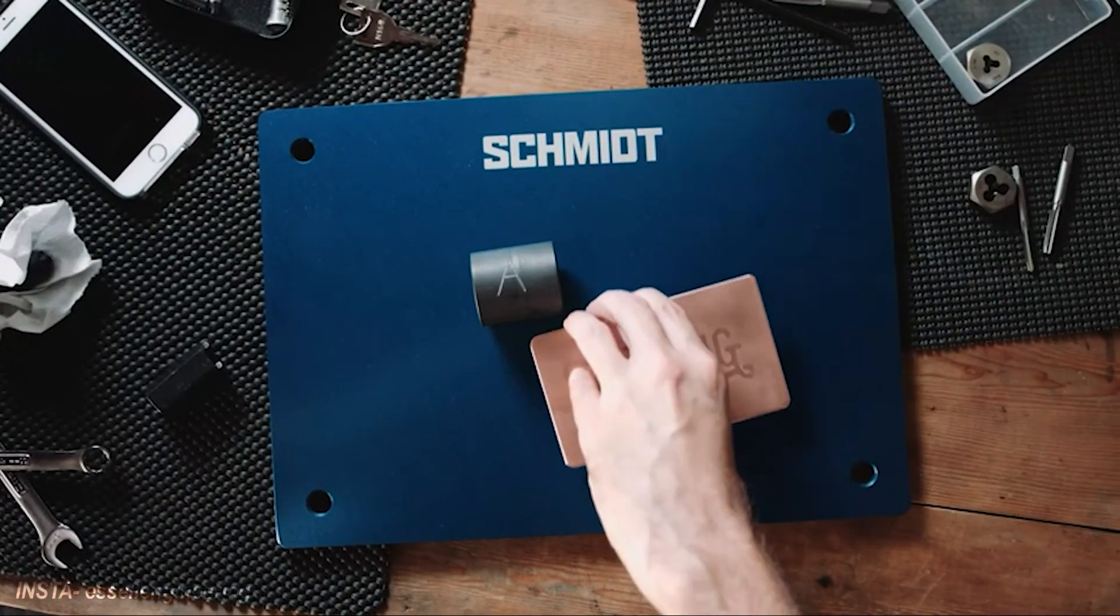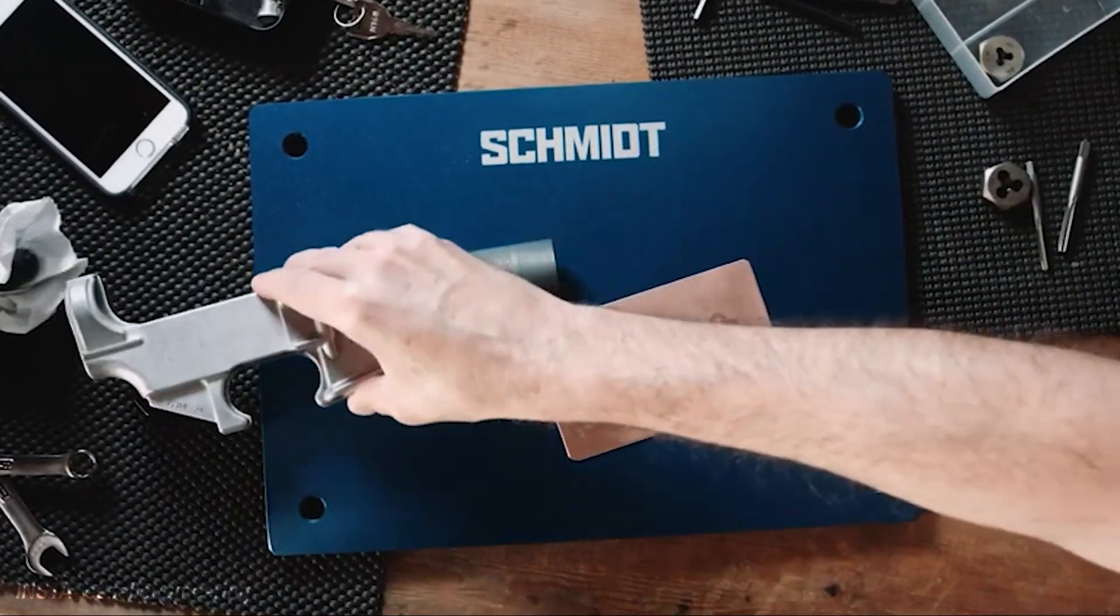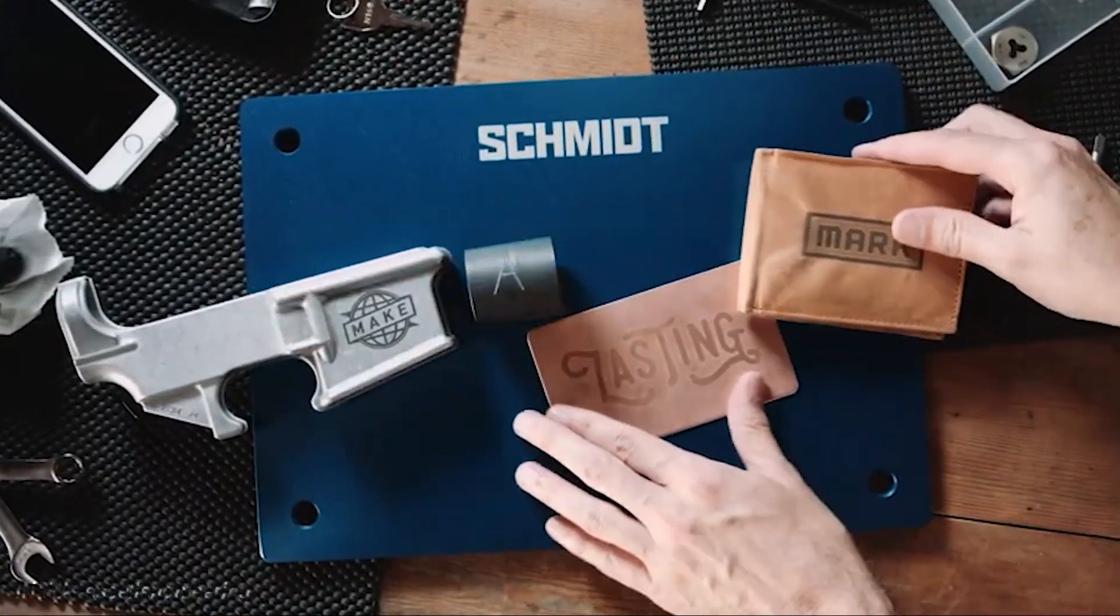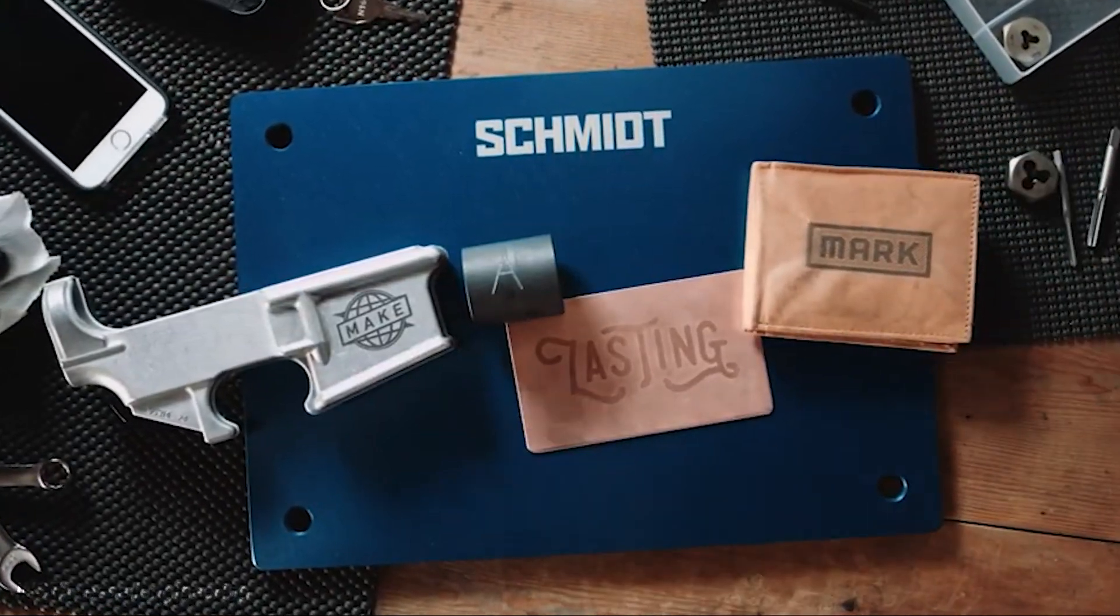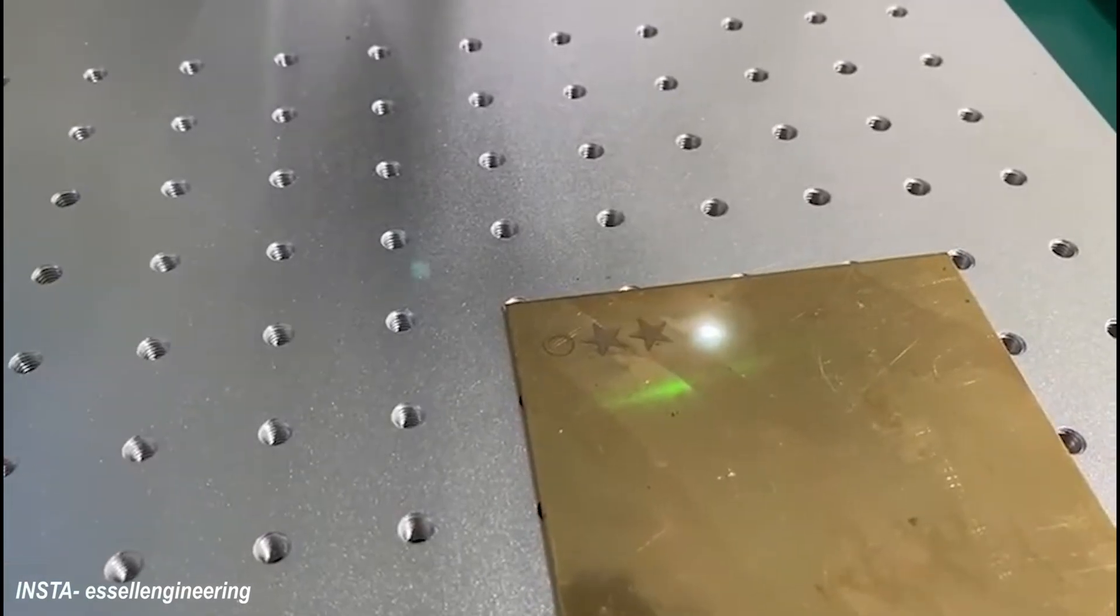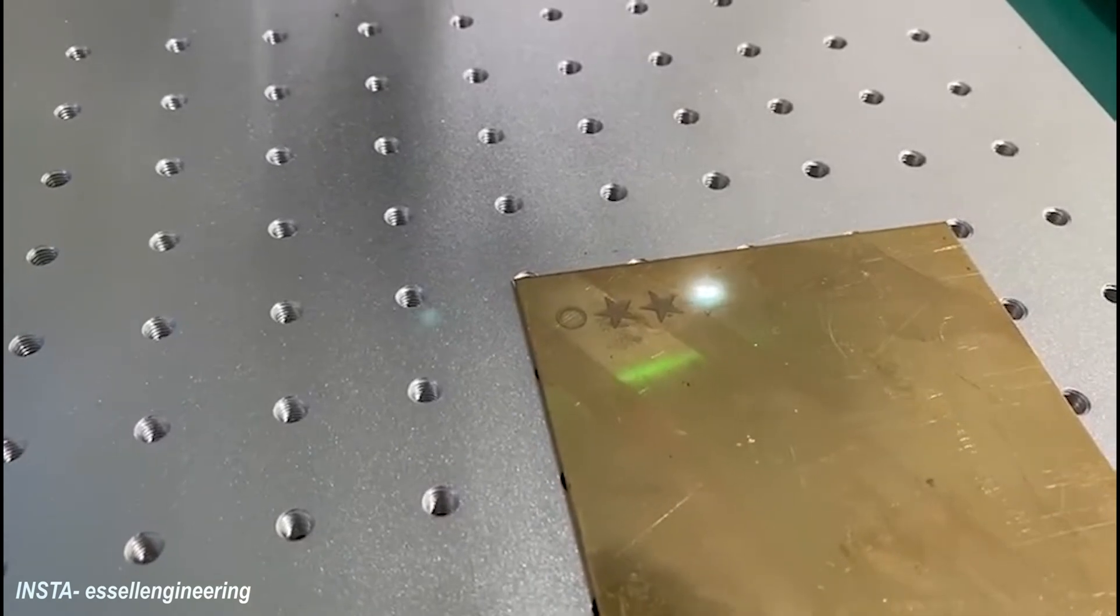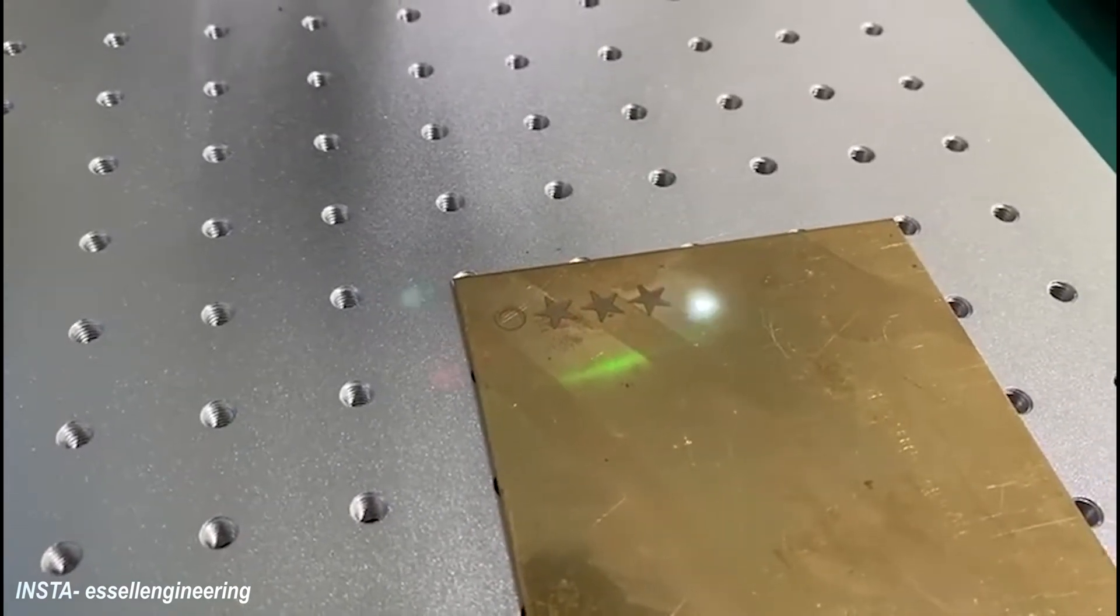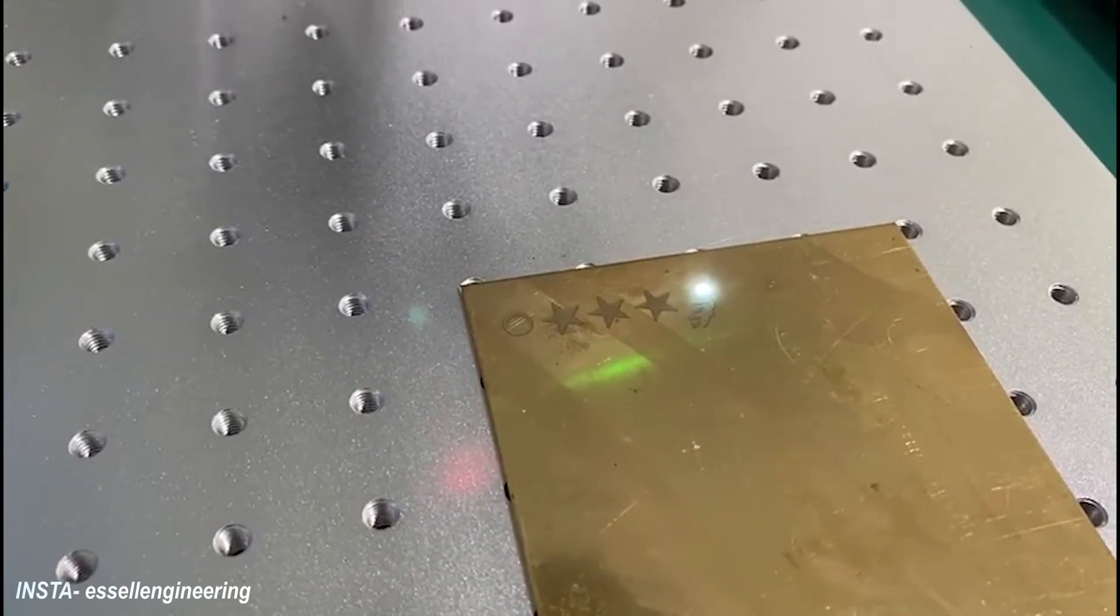In fiber lasers, the gain medium is an optical fiber silica glass mixed with a rare earth element which is called ytterbium. Fiber lasers are used in the manufacturing industries for cutting, welding, and engraving the metals.